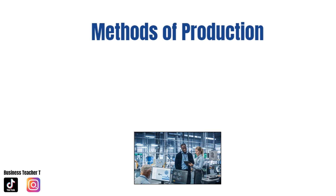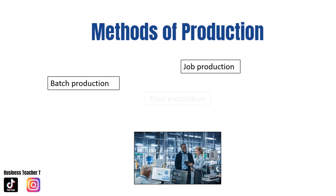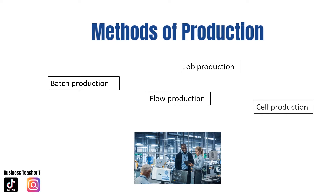Businesses that provide goods can choose from four different types of production processes: job production, batch production, flow production, or cell production.